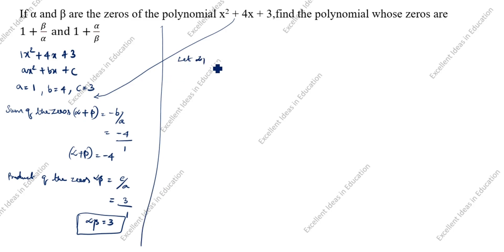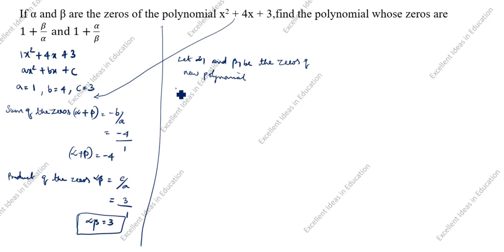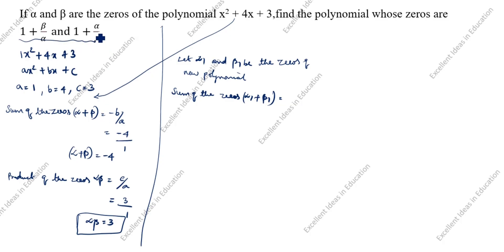Let alpha 1 and beta 1 be the zeros of the new polynomial. The zeros of the new polynomial are given as: alpha 1 equals 1 plus beta by alpha, and beta 1 equals 1 plus alpha by beta.